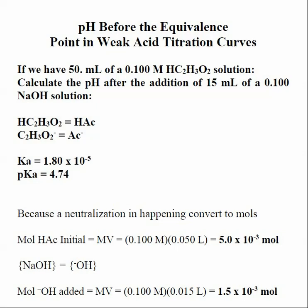One of the most important ideas in titration curves is knowing where we are in our titration curve, because the calculations we do are dependent on that position. In this case, we have added strong base to our solution — 50 milliliters of 0.1 molar acetic acid, our weak acid — and now we're adding strong base, so there's going to be a neutralization reaction occurring.